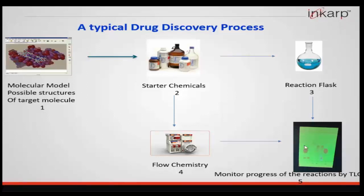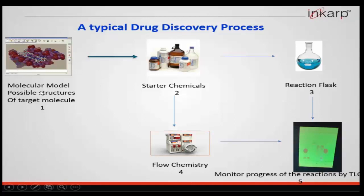If the intensity of the starting materials in the TLC remains the same, you can take a call to start the workup of the reaction. There are many stains available — for UV active samples you have a UV source; for UV inactive samples you have many others like ninhydrin, KMnO4, iodine, and DNP stains. Based on the functional groups involved in your reaction mass, you will decide which stains to use. Once you have designed your structure, chosen starting chemicals, and decided whether to use an RB flask or flow chemistry, you proceed to instrumentation.